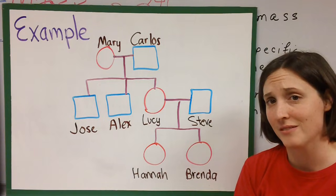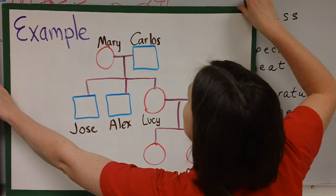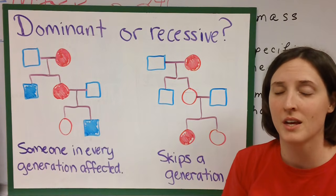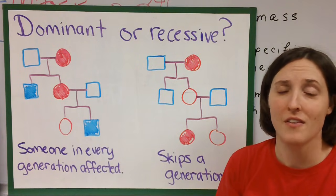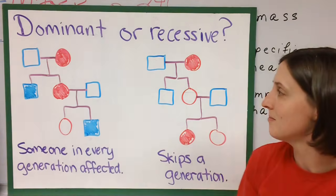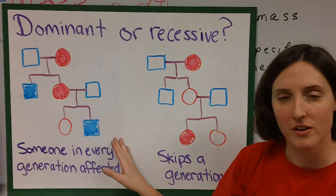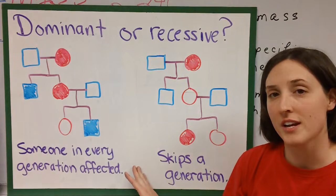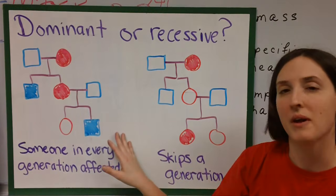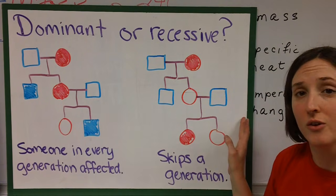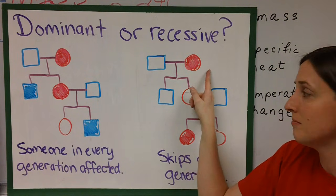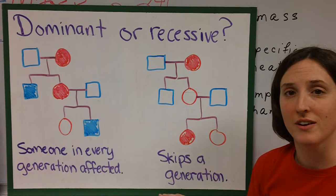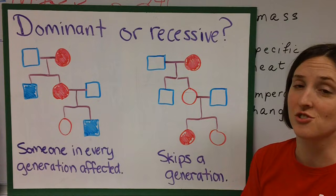That's how you make a family tree — it's pretty easy when you think about it. So how do we tell if traits are dominant or recessive on a family tree? You could write out a genotype for every single person, but for now we're going to look at some general patterns. If somebody in every generation is affected by the trait, then the trait is probably dominant since it shows up every generation. On the other hand, if the trait shows up in the first generation, skips the second generation, and reappears in the third, we could assume it's recessive because it doesn't show up all the time.